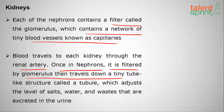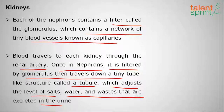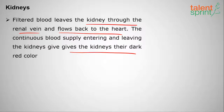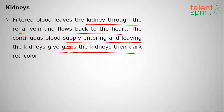Blood travels to each kidney through the renal artery. Once in the nephrons, it is filtered by the glomerulus, then travels down a tube-like structure called the tubule, which adjusts the levels of salts, water, and waste excreted in the urine. Filtered blood leaves the kidney through the renal vein and flows back to the heart. The continuous blood supply entering and leaving the kidneys gives them their dark red color.